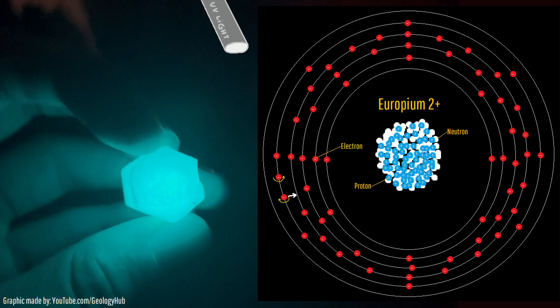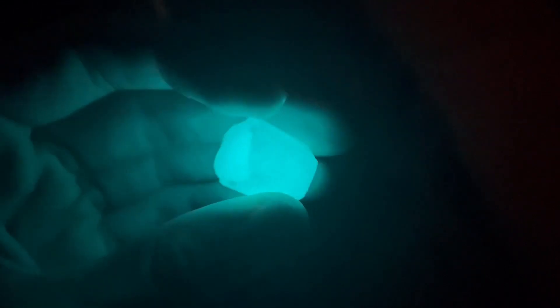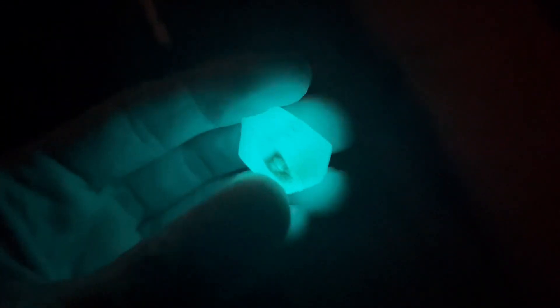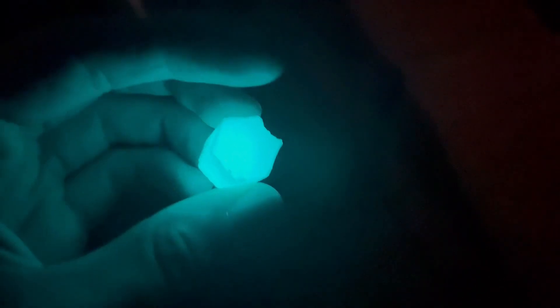This process can occur for seconds, minutes, hours, and in rare cases, days, causing a decreasing amount of light to be released over time. If you are wondering how europium 2+ is the cause of these reactions in both fluorite and strontium aluminate despite not technically comprising their chemical formula, this is how.